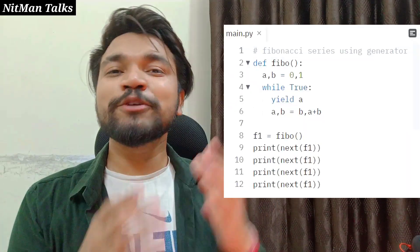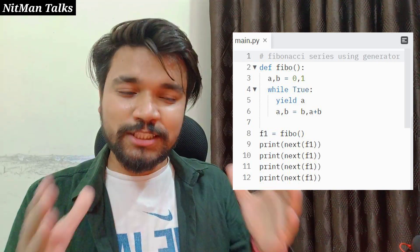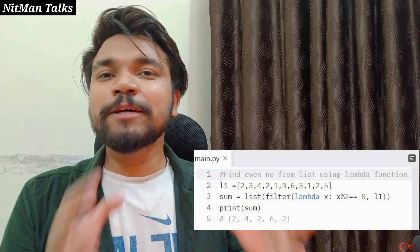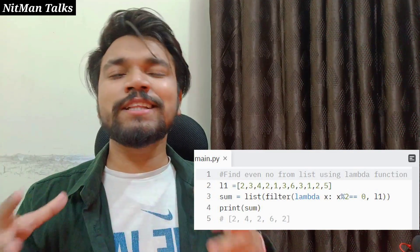The next question was to create a Fibonacci series using a generator. Since I had already practiced this in many previous interviews, I wrote the code and explained how to use the next() function to get values from the generator. I also answered a question about filtering even numbers from a list using a lambda function.